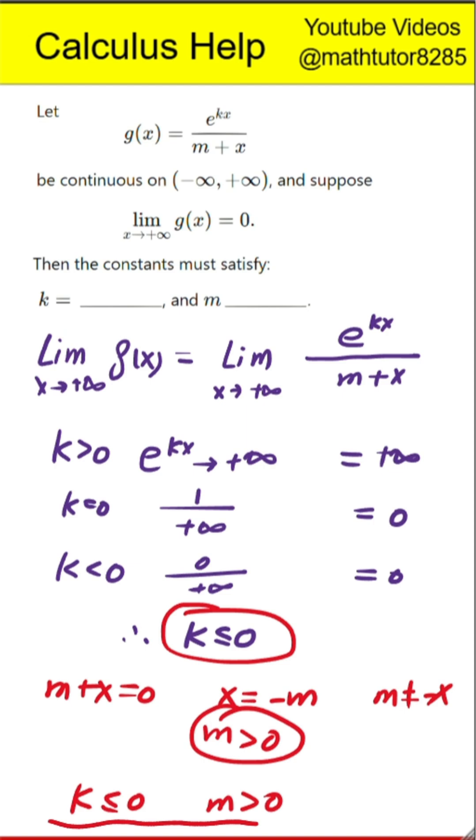Next step, putting these together, we conclude that k must be less than or equal to zero, and m must be strictly greater than zero. This is the final answer.